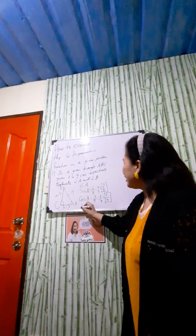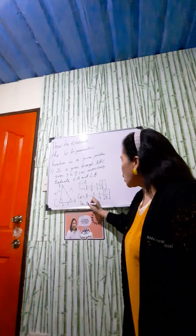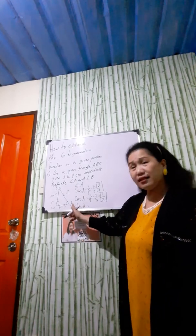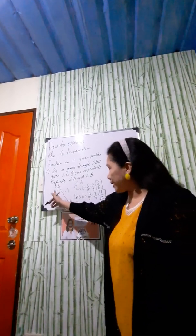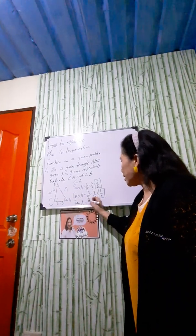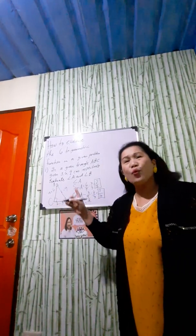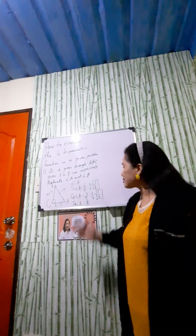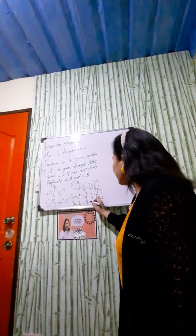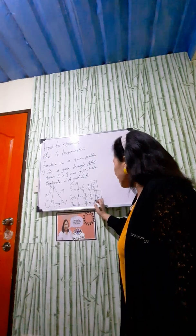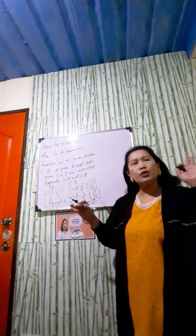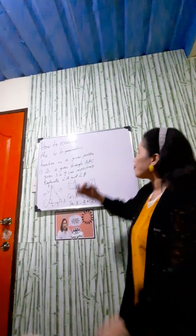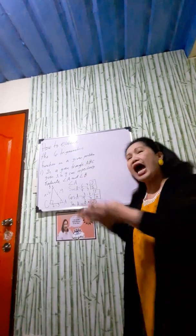Next is tangent A. Using TOA, that is opposite over adjacent. The side opposite angle A is six, and the adjacent side is three, so tangent A equals six over three, which simplifies to two — a whole number, meaning the denominator is one. These are the three primary trigonometric functions for angle A.